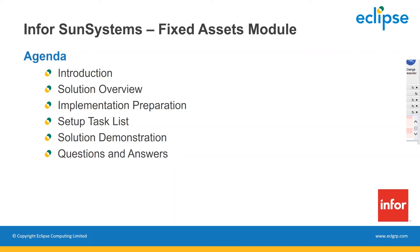After that, we'll jump into a short solution demonstration where we'll take a look at the software itself. The version of Sun Systems we're going to be showing is version 6.2, which is the latest version. With a couple of minor exceptions, everything we'll talk about is applicable to all versions of Sun Systems — versions 4, 5, and 6. Finally, we'll open up the session for any questions and answers.